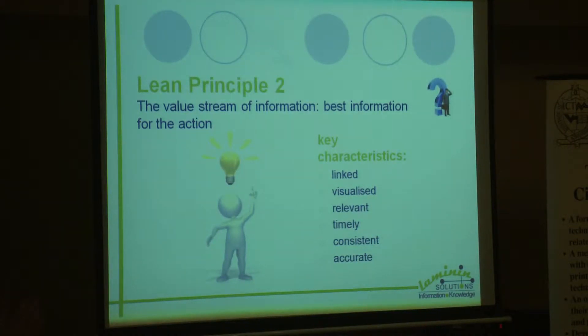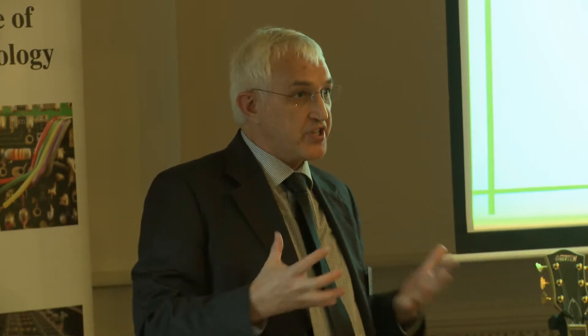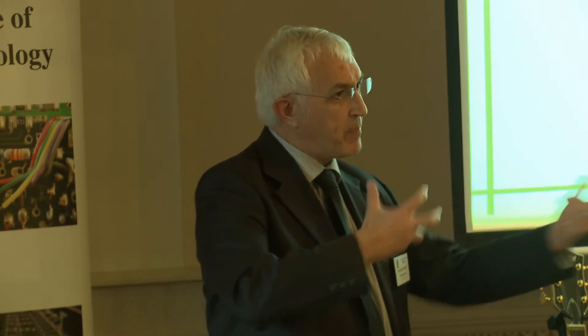If we look at principle number two: value stream. What is value stream in the context of information? It is about what we need to do with that information to make it valuable to the customer, to the user. It is about making sure that the information has the characteristics of quality information. Those characteristics are things like the information is linked, there are relationships, it relates to other bits and pieces.